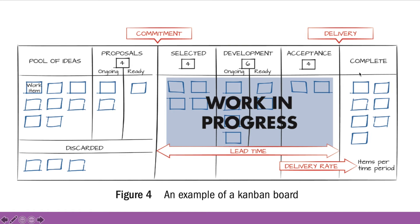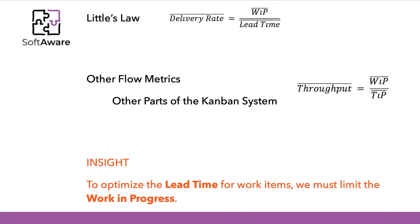By entering this last development stage, it is possible to compute both the lead time and the delivery rate to finalize the items per time period. If we consider Little's Law, it is possible to compute the average delivery rate within a project team by establishing the ratio between the average work in progress and the average lead time. This is actually the base formula to establish the average throughput for a specific stage or set of stages.